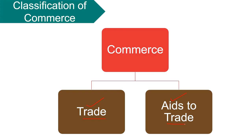Aids to trade are the auxiliaries to trade that ensure a smooth flow of goods and services from producers to consumers. They remove the barriers in the buying and selling of goods. These include transportation, warehousing, banking, insurance, advertising, etc.